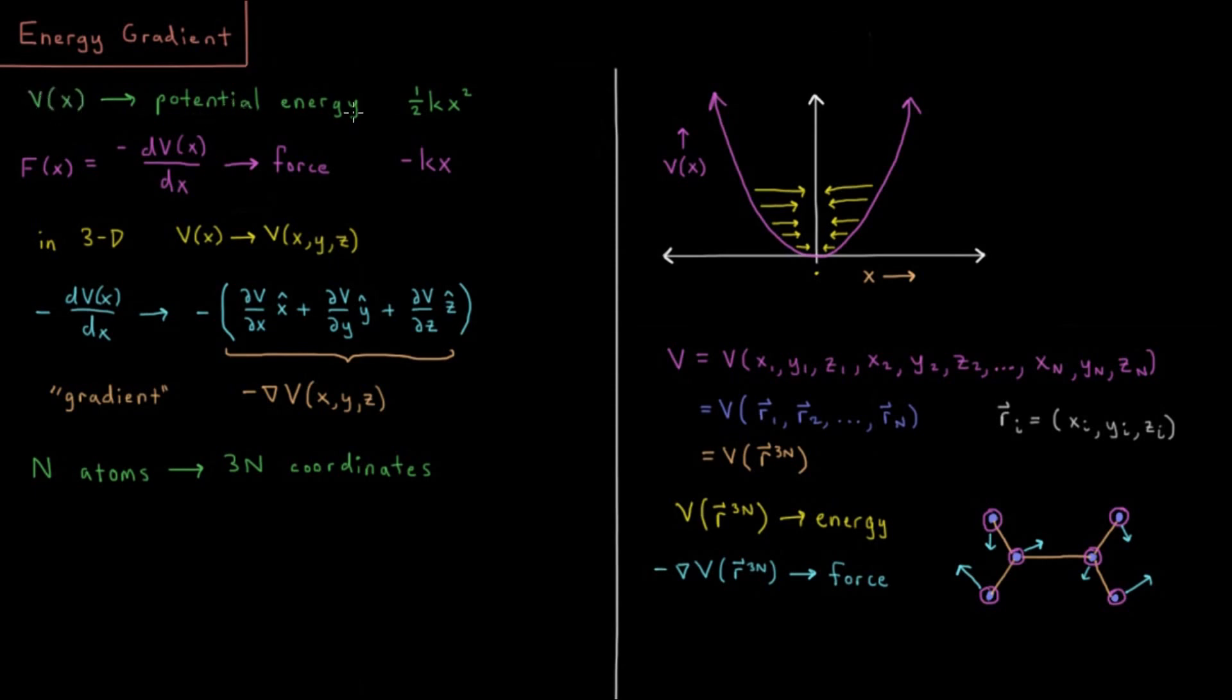So V of x might be some potential energy function in one dimension. And in something like the harmonic oscillator, I might define this to be something like 1 half kx squared. So that would be this type of function here, V of x, as a parabola, where the stiffness of this parabola would be determined by this k. And the variable x is how far we are from the middle or the equilibrium energy.